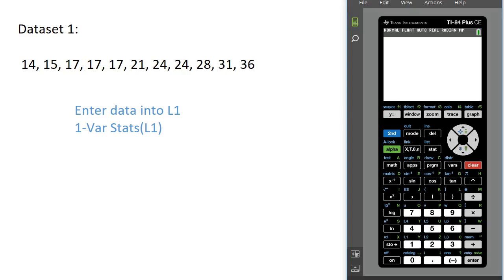In this video, we're going to compute mean, median, and mode for three different datasets using our TI calculator. So for the first dataset, we just have a list of raw data here, and we want to find mean, median, and mode.